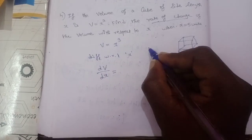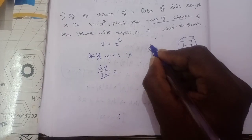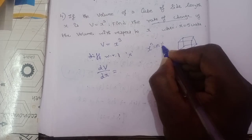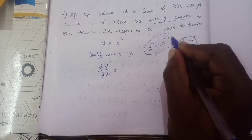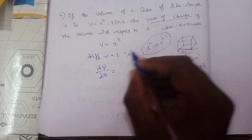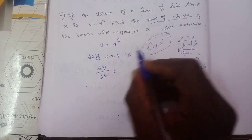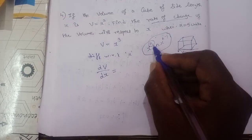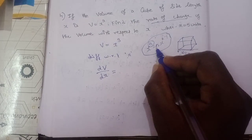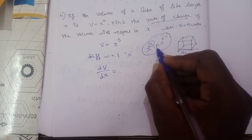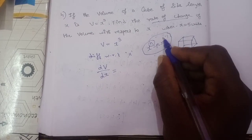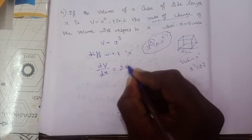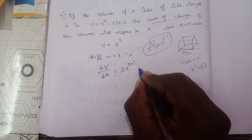We differentiate x³. Using the power rule: d/dx(xⁿ) = n·xⁿ⁻¹. So differentiating x³ gives 3x³⁻¹, which equals 3x².